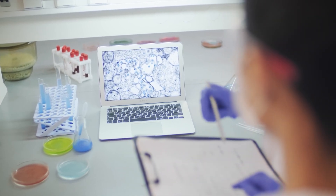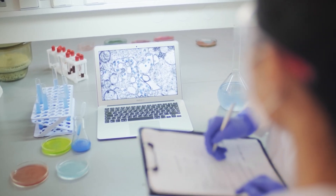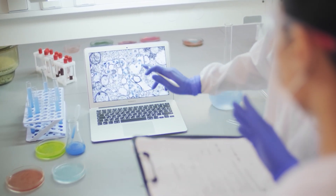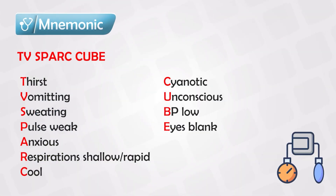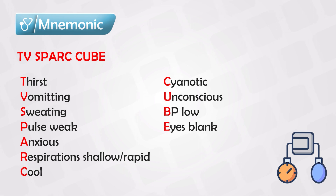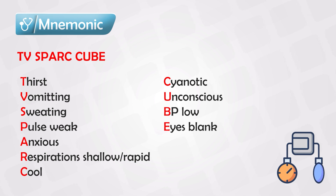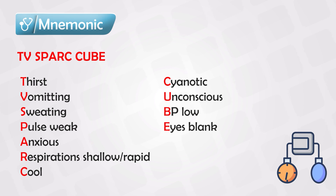Physiological shock can happen from multiple causes, subdivided into cardiogenic, neural, obstructive, or hypovolemic. The main symptoms are generally the same, and you should be able to differentiate between them quickly. We have a mnemonic to help memorize the symptoms — remember the TV spark cube.